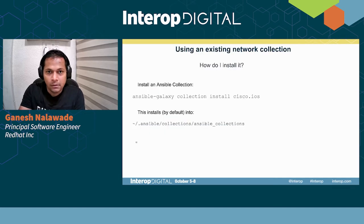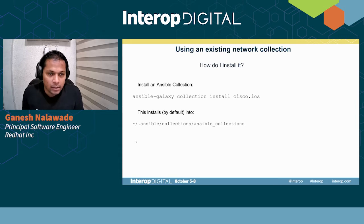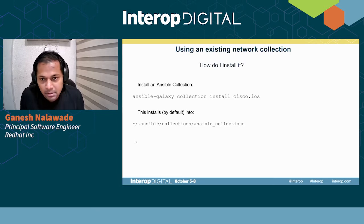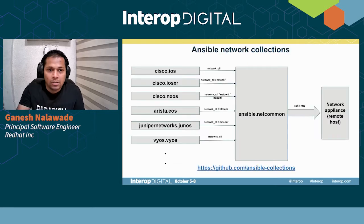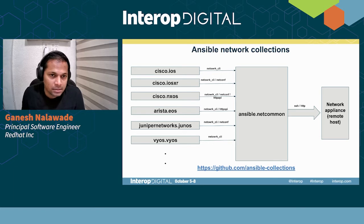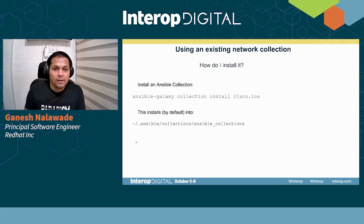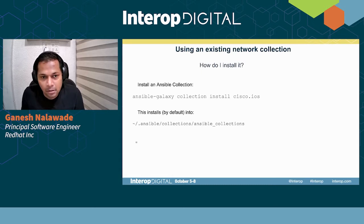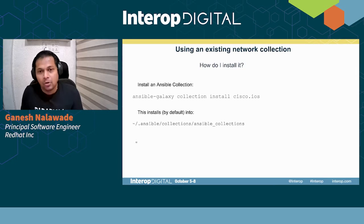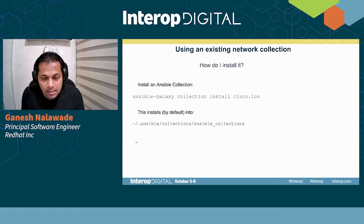If I want to use an existing collection from Ansible Galaxy or Ansible Automation Hub, I can run the Ansible Galaxy collection install command — for example, `ansible-galaxy collection install cisco.ios`. Here, Cisco is the namespace and ios is the name of the collection. A single namespace can have multiple collections such as IOS, IOS XR, NXOS, and so on. By default the collection is installed into ~/.ansible/collections/ansible_collections. All the code is copied there, and dependent collections such as Ansible netcommon are installed automatically as well.